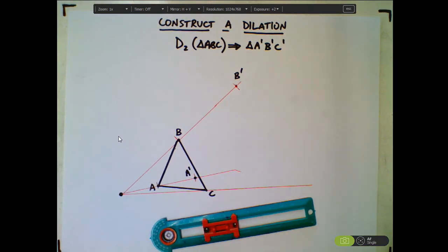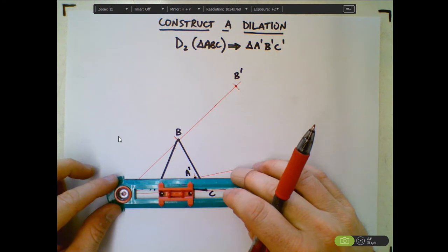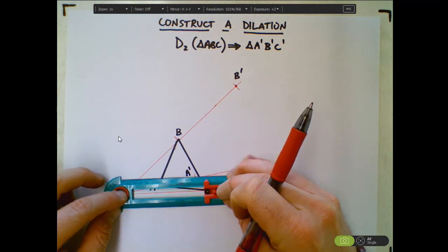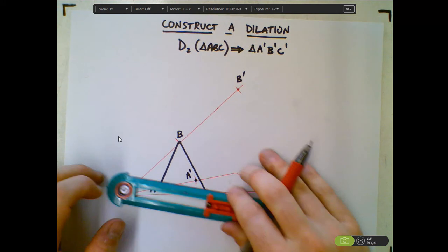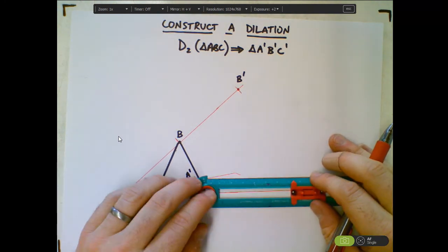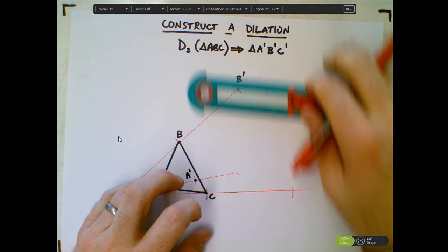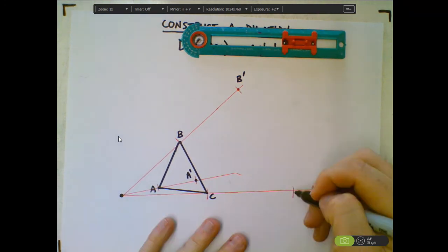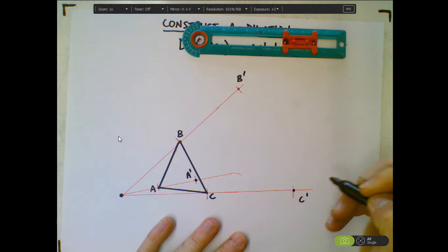And then the last one from the center to C. And then again, double that distance. So this is going to be C' right here.